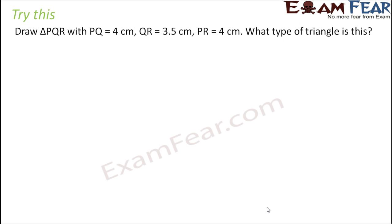Let us try this. Draw a triangle PQR with PQ equal to 4 cm, QR equals 3.5 cm and PR is equal to 4 cm. So basically PQ and PR are equal in length, so that means two sides of the triangle are equal. What type of triangle is this?